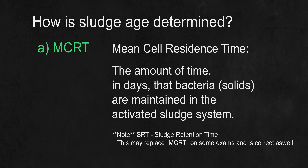The answer is A — MCRT, which stands for Mean Cell Residence Time. This is the amount of time in days that a cell of bacteria, or a pound of bacteria, also commonly called solids, remains in the activated sludge system. Note that on certain exams you may see SRT, which means Sludge Retention Time. This essentially means the same as MCRT, however it is calculated differently.